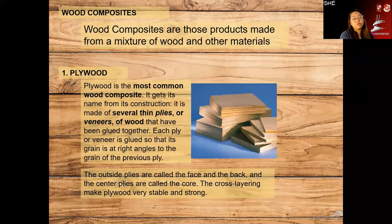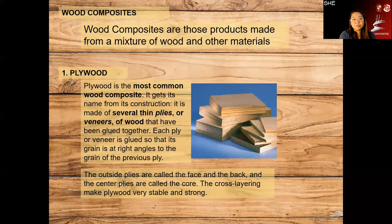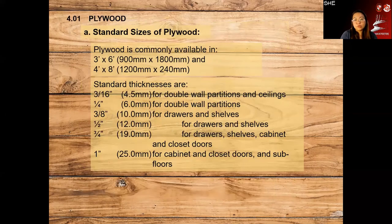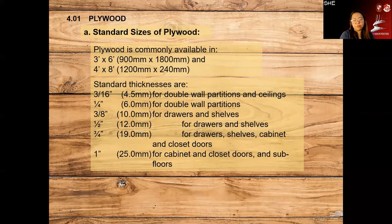We also have wood composites — products made from a mixture of wood or other materials, manufactured in factories. The most common is plywood. Plywood is the most common wood composite. Many thin plies or veneers of wood are glued together to create plywood. The standard size is 1.2 by 2.4 meters. There is also 0.9 by 1.8, but commercially the most available is 1.2 by 2.4.